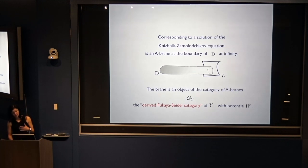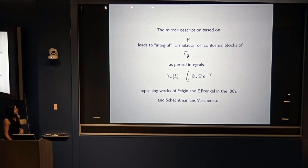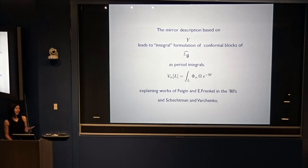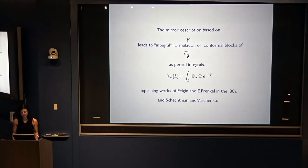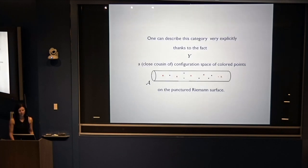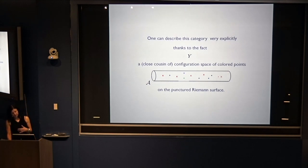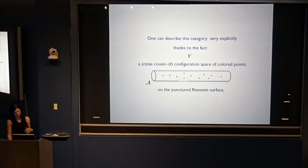Corresponding to a solution of the KZ equation is an A-brane at the boundary of the long cigar at infinity. That A-brane is an object of the derived Fukaya-Seidel category on Y, because we've added the potential. The mirror description, in particular, leads to integral formulations of conformal blocks as period integrals, which explains in retrospect the works of Feigin and Frenkel from the 1980s, and also Schechtman and Varchenko, that gave integral formulas for conformal blocks of the affine Lie algebra.